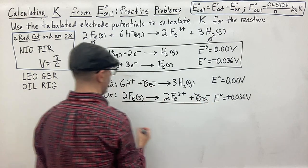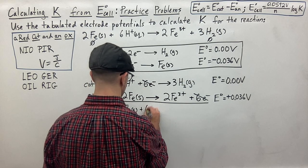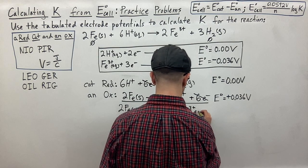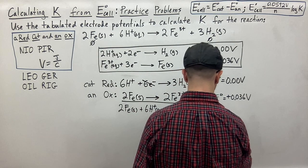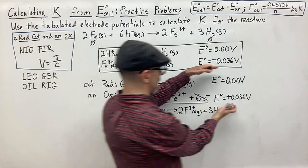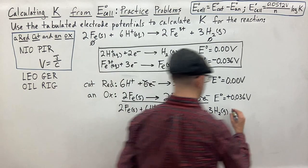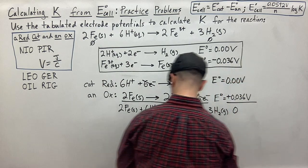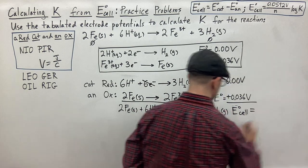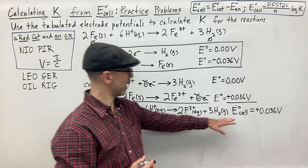Adding the two electrode potentials together gives us the overall standard electrode potential of the cell. So E°cell = 0.00 V + 0.036 V = +0.036 V. That is how you calculate the electrical potential of the cell for this reaction.